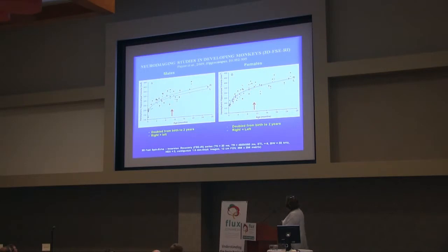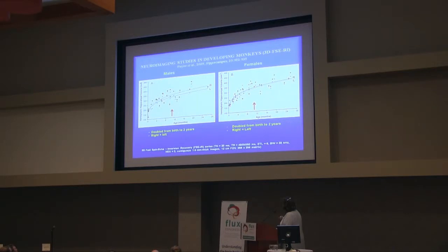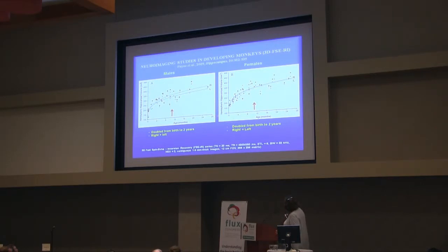For morphology, this is a longitudinal study looking at volumetric measures of the hippocampus across age for the same animals in males and females. You can see a very steep increase in volume all the way to year one, and then a much more moderate increase up to two to three years of age. This is quite similar to what has been shown in humans. We can also see that while there are no sex differences in females, the left and right hippocampi were different in volume in males.